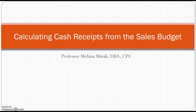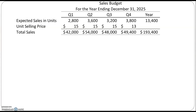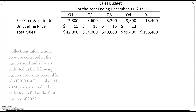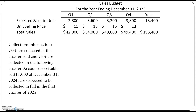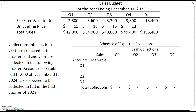In this video I'm going to show you how to calculate cash receipts using the sales budget. We've been looking at the master budget, and within the master budget your very first budget is the sales budget. But sales is not the same as cash collections — we give our clients terms such as 2/10 net 30 or 3/15 net 45, giving them an extended period of time to pay. Because of that, our cash collections may not occur in the same quarter as the actual sales. Here we have some collections information we can use to create a schedule of expected collections.